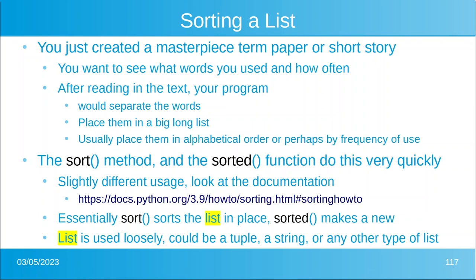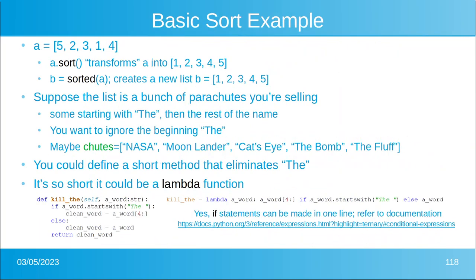I'm using the word list loosely because it could be just about any variable in Python. Here is a basic sort example — I'll let you look at it on screen. Suppose you have a list of parachutes you're selling online, and some names start with the word 'The.' You don't want all the groups starting with 'The' sorted together, so you want to ignore that beginning word. You can define a very short method that eliminates the word 'The' — in fact it's so short it could be a lambda function — and you can see on screen how that would work. Note that if statements can be written in one line.